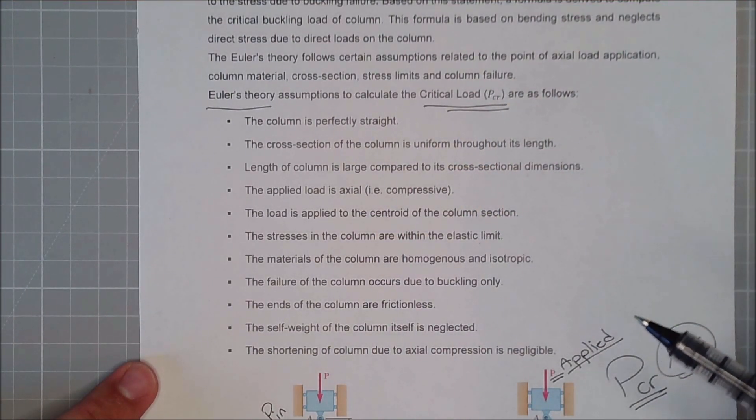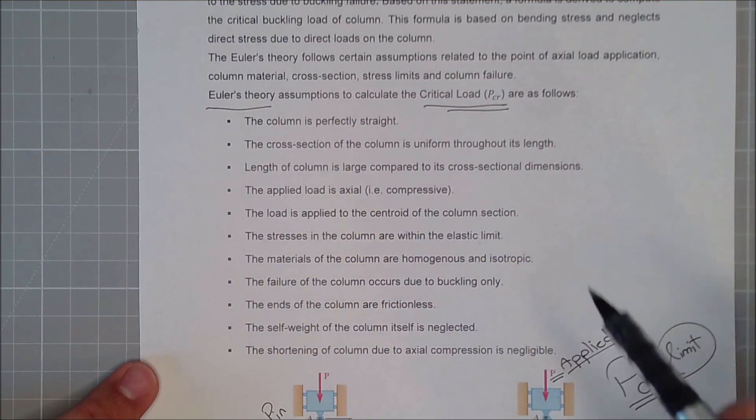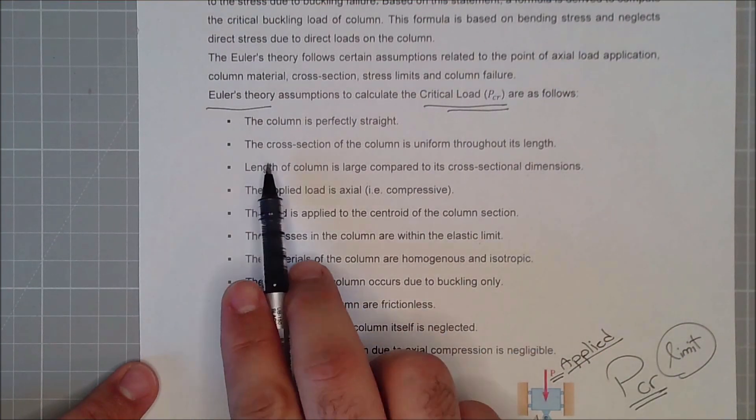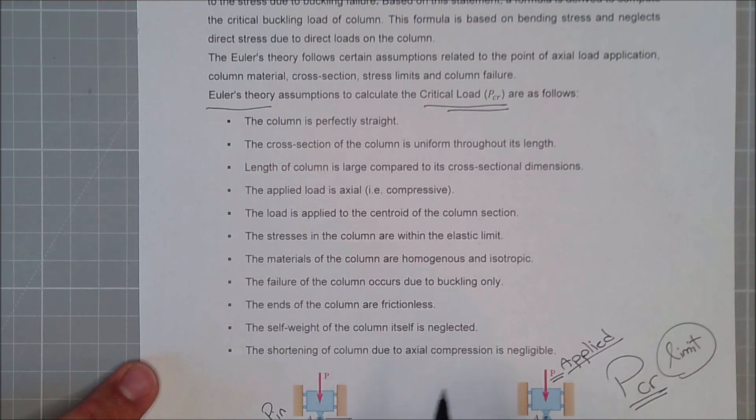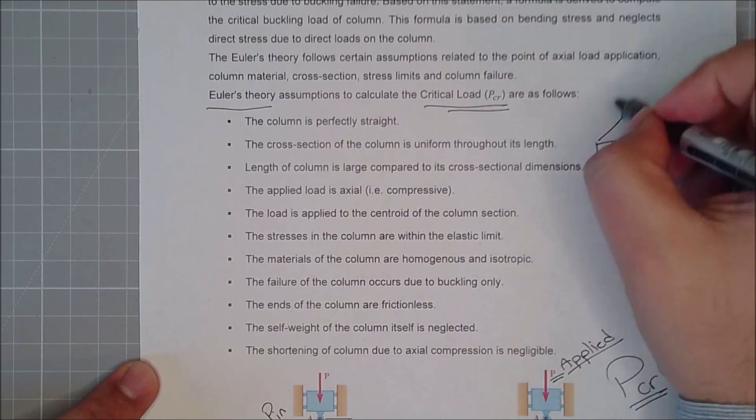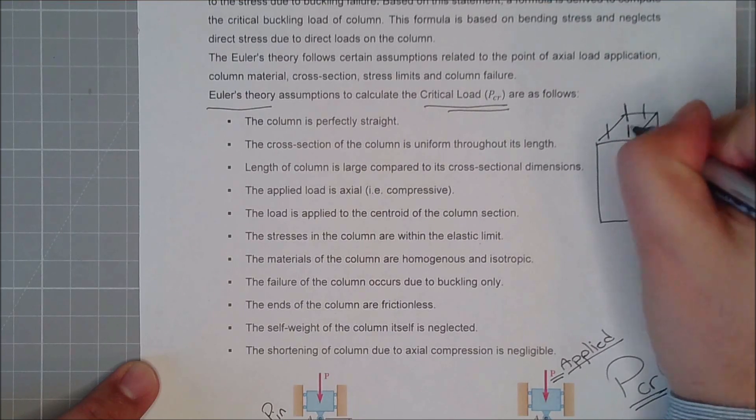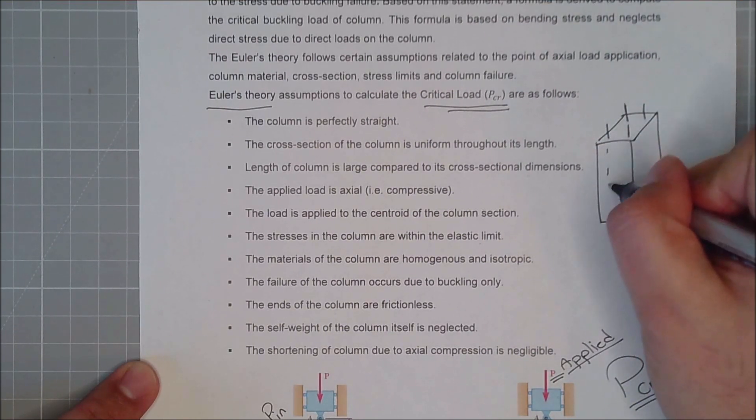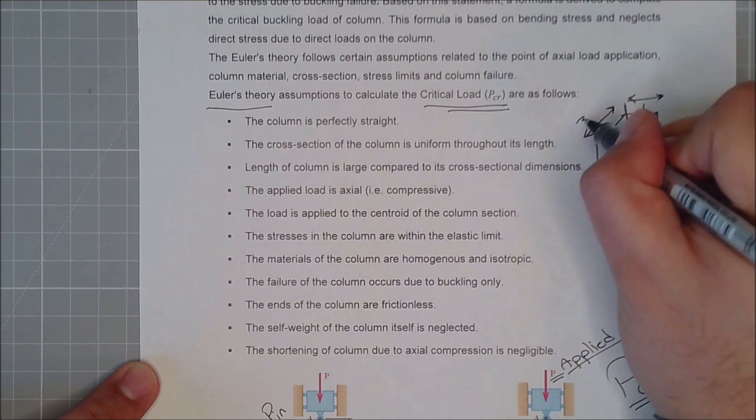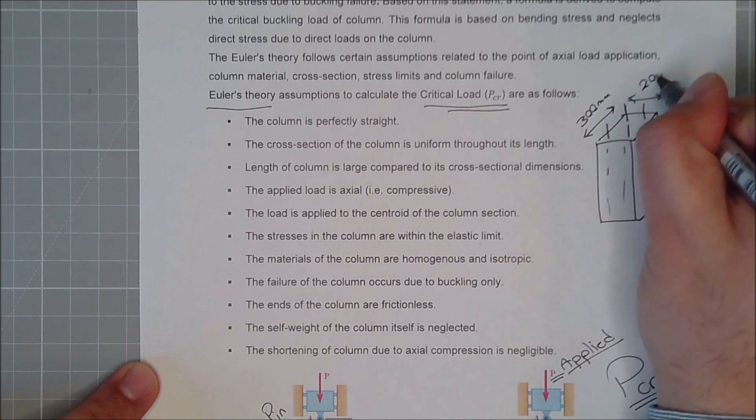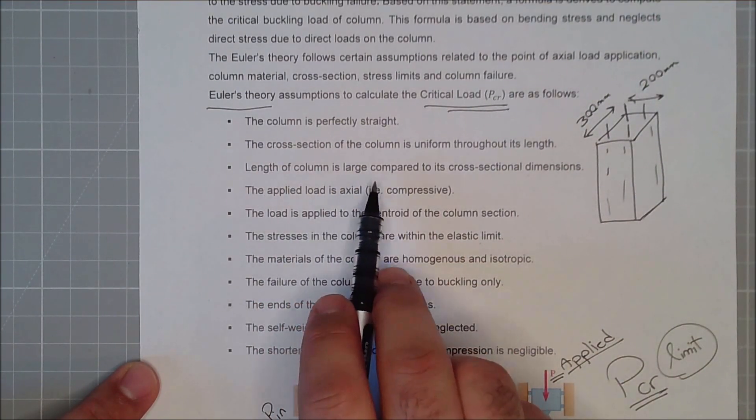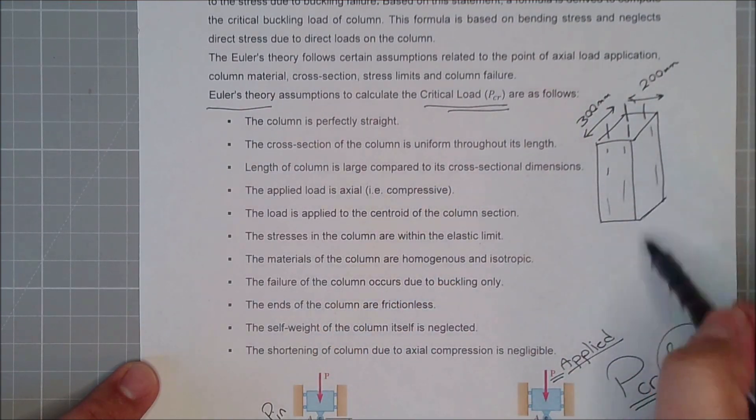In order to calculate the critical load using Euler's theory, we have to follow some assumptions. Let's go through them one by one. First of all, the column is perfectly straight. So, you don't have any bending column. The cross-section of the column is uniform throughout its length. That means that, for example, if I have a reinforced concrete column, and I have some reinforcement in it, throughout its length, these reinforcements are carrying on and the same cross-section, the same cross-sectional dimensions.